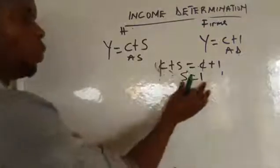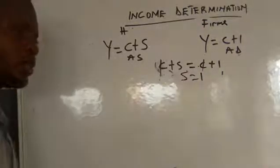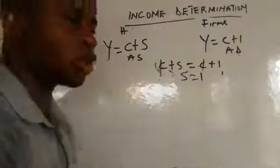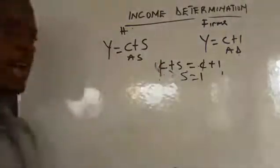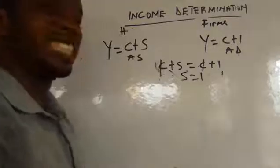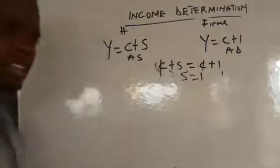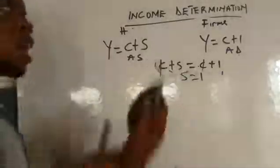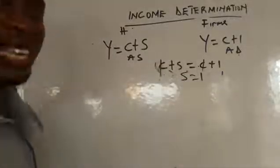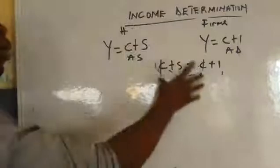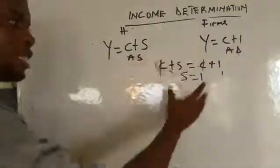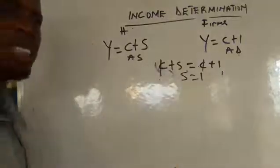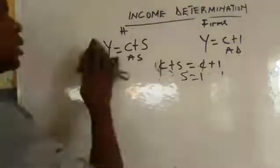This is how income is determined in the two-sector model. The equilibrium point is where saving equals investment, meaning supply equals demand. But let's show it graphically to understand it more clearly.